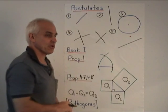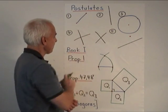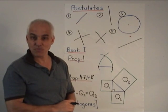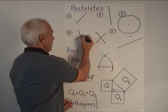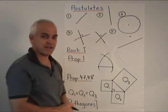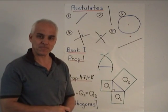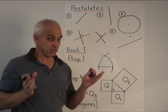The fourth postulate concerns right angles. So right angle is the configuration made by two perpendicular lines. We usually use that symbol for perpendicular lines. So there are two right angles. And the postulate is that any two right angles are the same.